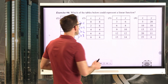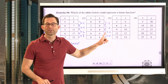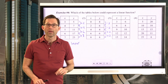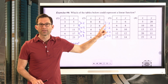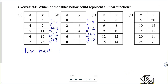Looking at table two: the change in y is negative 2 — we're subtracting 2. But then it goes back to adding 2. Had it been minus 2, minus 2, minus 2 throughout, this would have been our winner. But because it's minus 2, minus 2, then plus 2, plus 2, this is nonlinear.